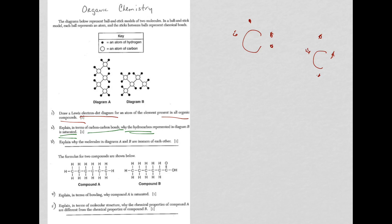Alright, for question three, it says, explain why the molecules in diagrams A and B are isomers of each other. Well, if you know what the word isomer means, then you have the answer. You have the same number of carbons and hydrogens in A and B, but the arrangement is different, or there's a different structure. So, same number of carbons and hydrogens, but a different structure.